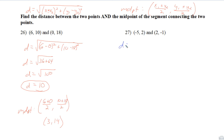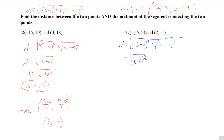For the next pair of points, the distance equals the square root of (-5 - 2)² + (2 - (-1))². That's (-7)² + 3² = 49 + 9 = the square root of 58, which is somewhere between 7 and 8.